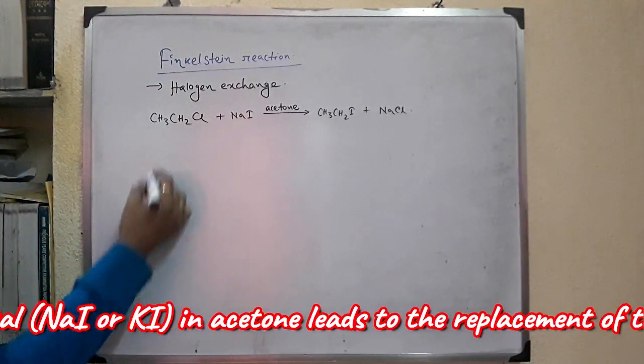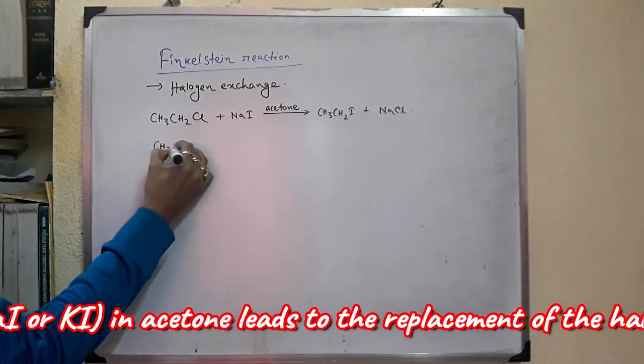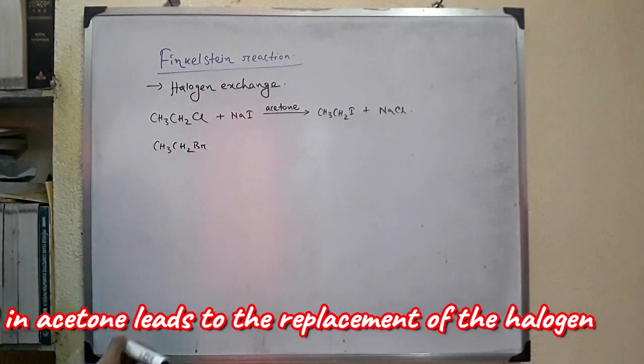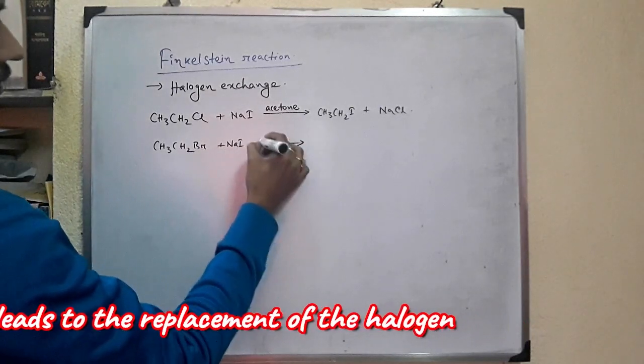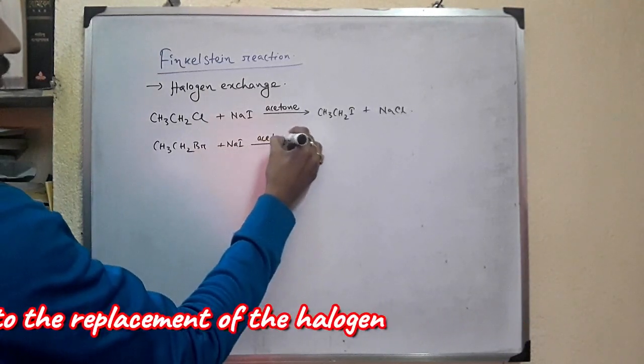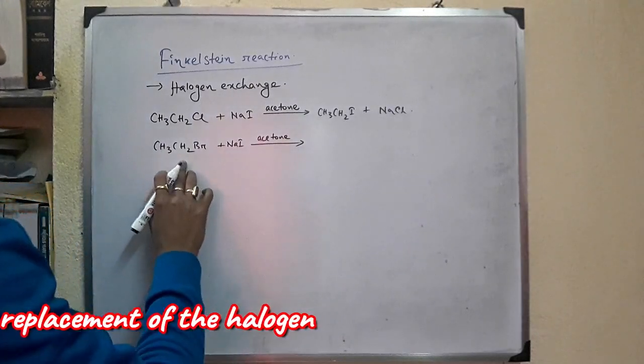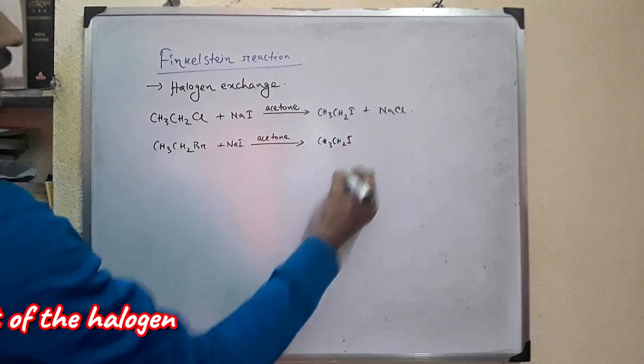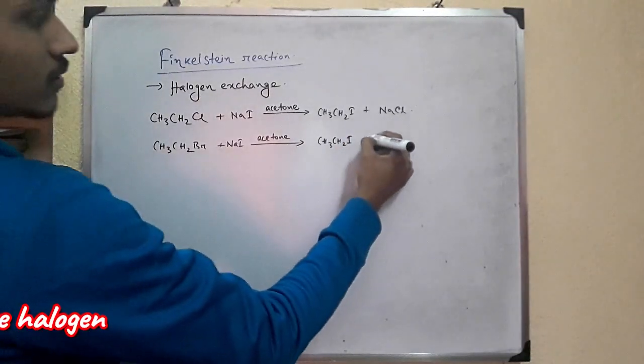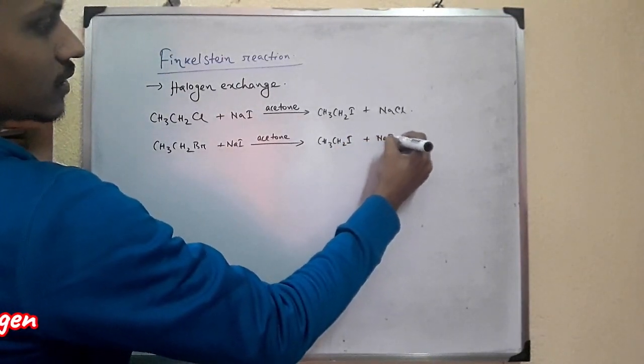Let's take another example: CH3CH2Br ethyl bromide plus sodium iodide in acetone is converted into CH3CH2I ethyl iodide plus NaBr.